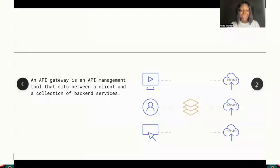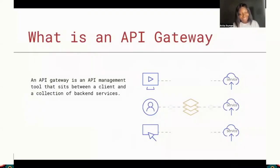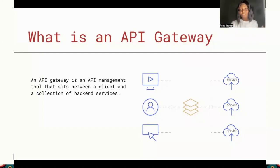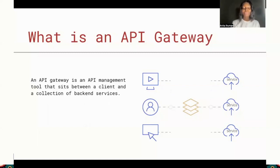What exactly is an API gateway? An API gateway is an application management tool that sits between the client and a collection of back-end services. It serves as a middleman between you, the user trying to access those back-end services — whether through your system or your phone — and receives the call or request you're trying to make, then sends it to the back-end services.